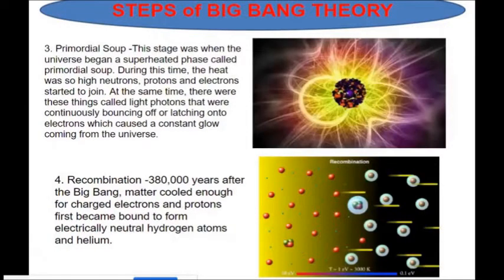Next one, the primordial soup. This stage was when the universe began superheated phase and called primordial soup. So, during this time, the heat was so high and neutron proton and the electron started to join. At the same time, class, there were things called the light photons that were continuous bouncing or launching into electron, which caused a constant glow coming from the universe.